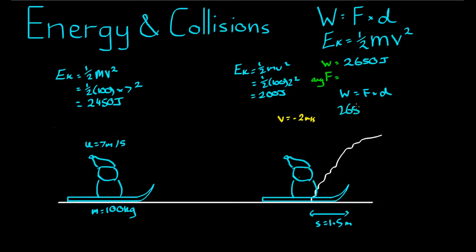Then 2650 is equal to the force times distance, hasn't changed, that's 1.5. So 2650 divided by 1.5 is equal to the force, that's roundabout equal to 1767 newtons.